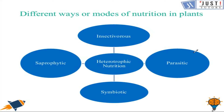Heterotrophic plants obtain food from other plants by following other ways. The modes they use to obtain food include parasitic mode, saprophytic mode, symbiotic mode, and some are insectivorous. Now let's learn what each of these modes involves.